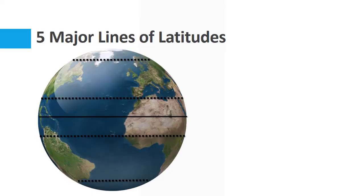I am talking about 5 major lines of latitudes. This middle line is called the equator. It divides the earth into two parts: the Northern Hemisphere and the Southern Hemisphere.